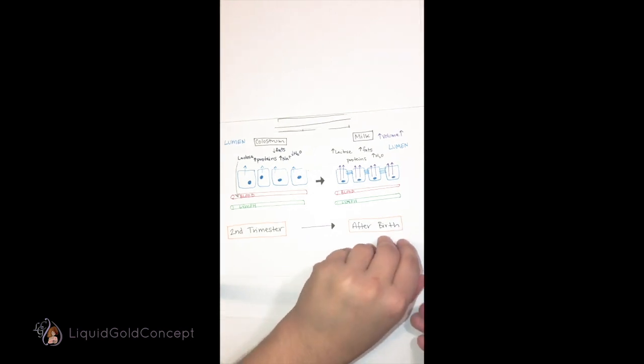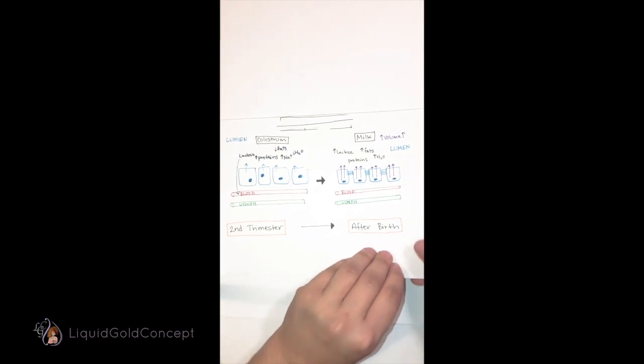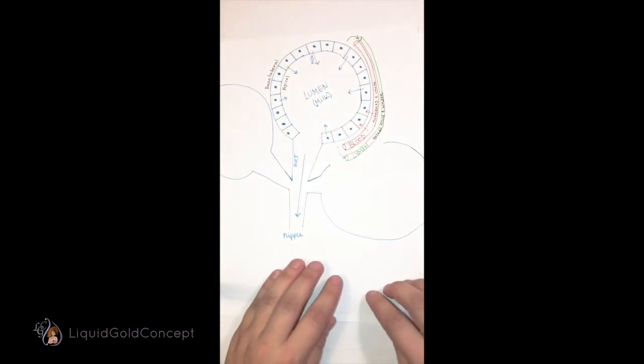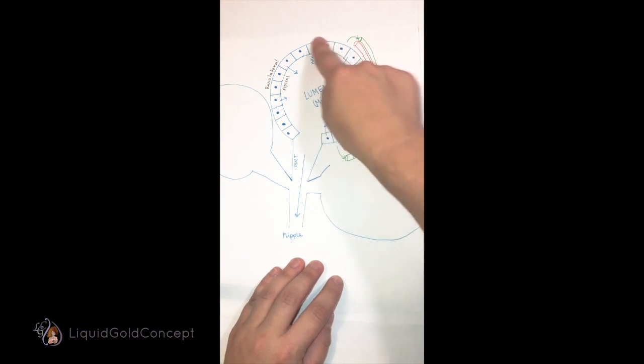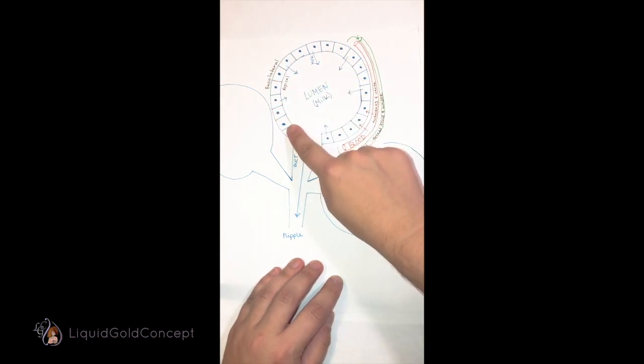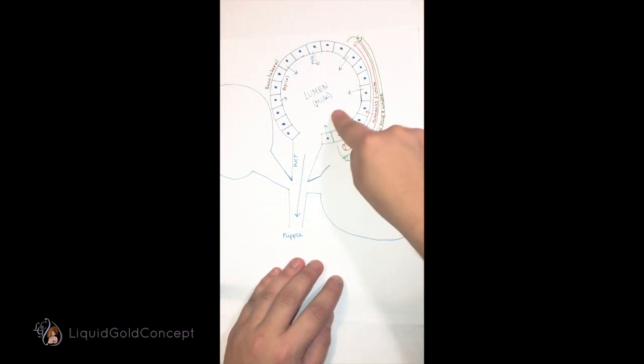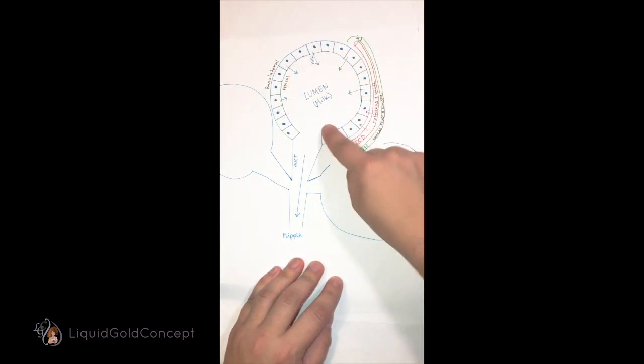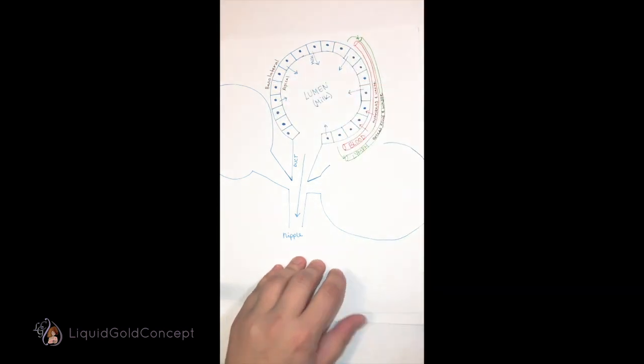To show how this happens, let's zoom in on these epithelial cells. As a quick review, the epithelial cells line the alveoli of the mammary glands. The lumen is the space inside of them. The side of the epithelial cells that is closest to the lumen is called the apical side. The side that is closest to the blood is the basolateral side.